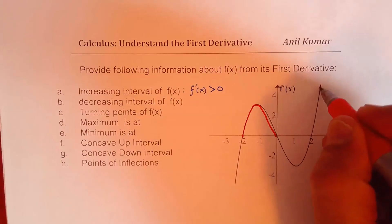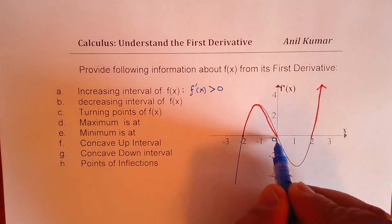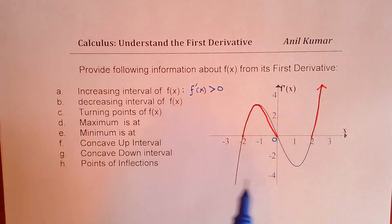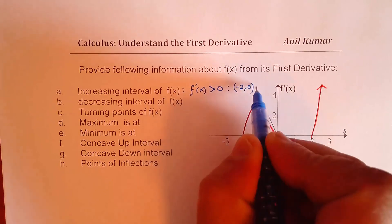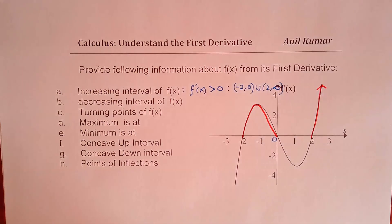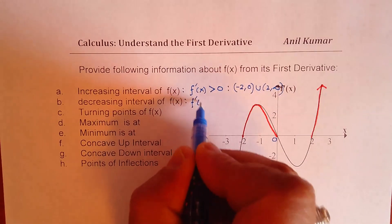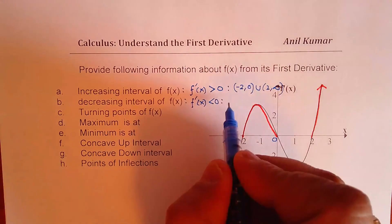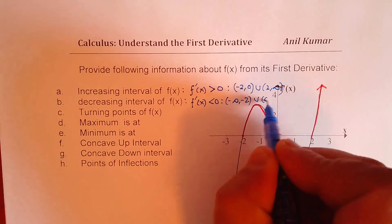So this is the area where the first derivative is positive — do you see that? That gives you the answer for the increasing interval of the function. It increases from minus 2 to 0, and then after 2. So you can write this answer as from minus 2 to 0, union 2 to infinity. The decreasing interval is the remaining portion where the first derivative is less than 0, so it is from minus infinity to minus 2, and from 0 to 2.